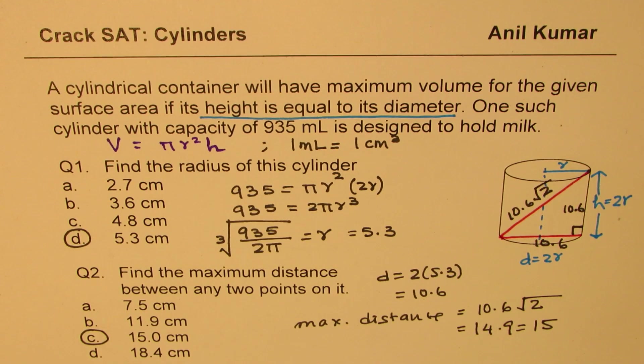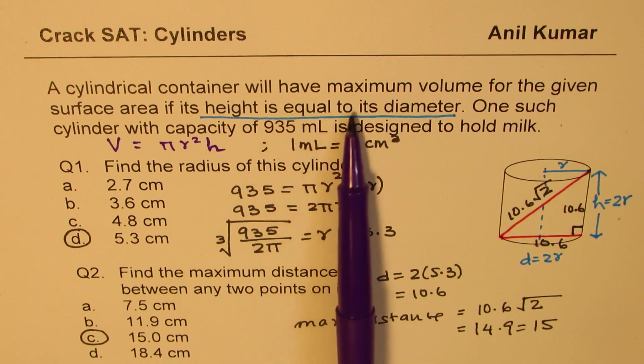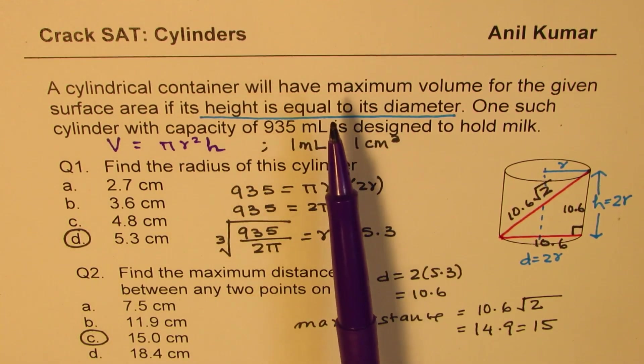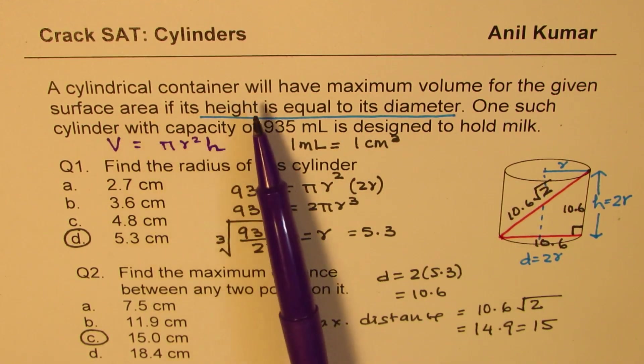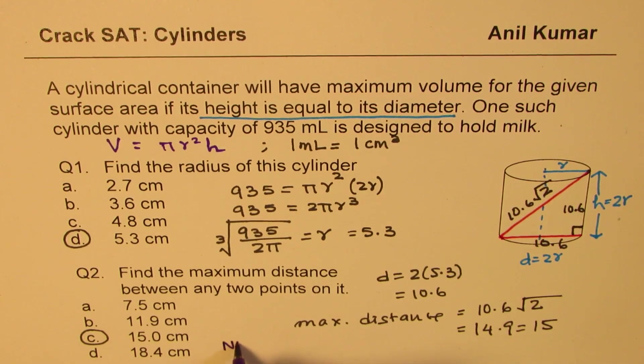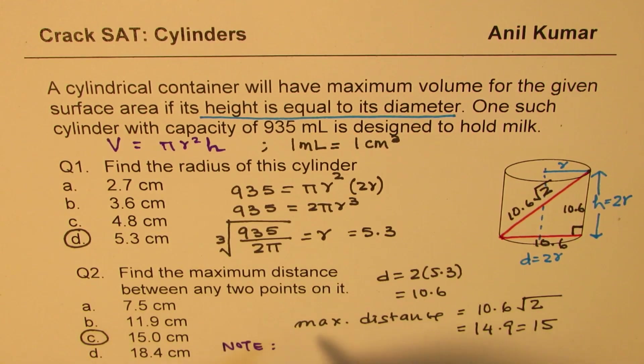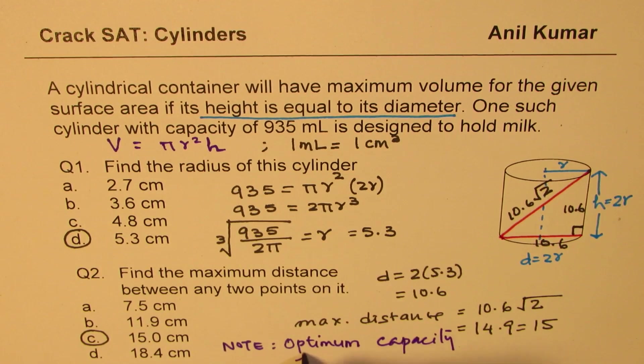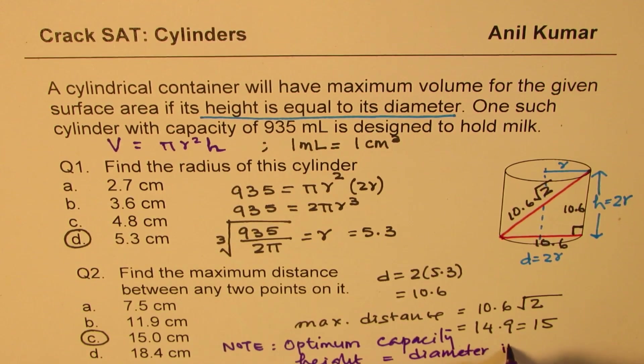Now, many times in the test paper, you may not be given this particular information that for maximizing the volume for a given surface area, height and diameter should be same. So it is important to remember. So note: for optimum capacity, height equals diameter in a cylinder. So it is the information which you should know.